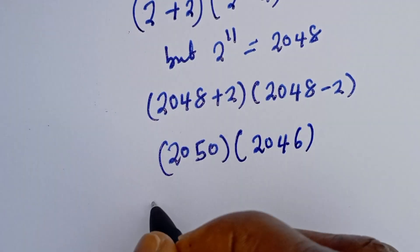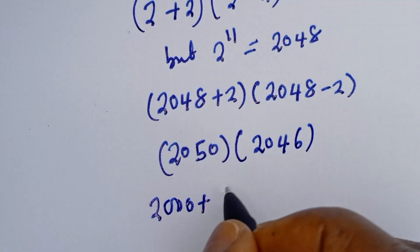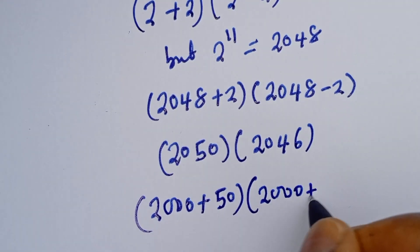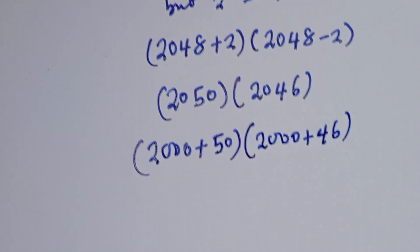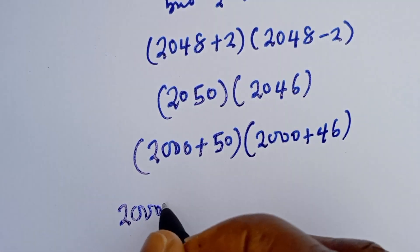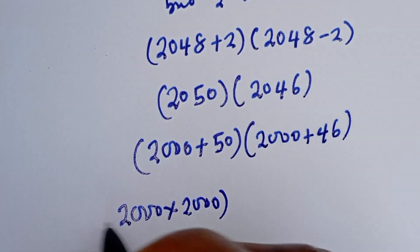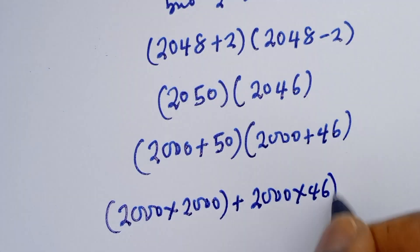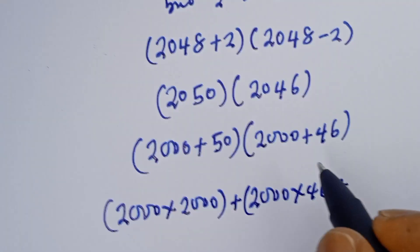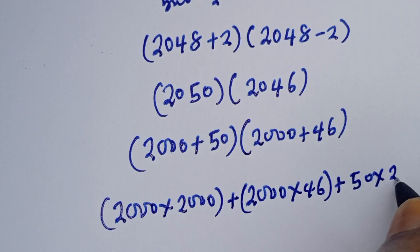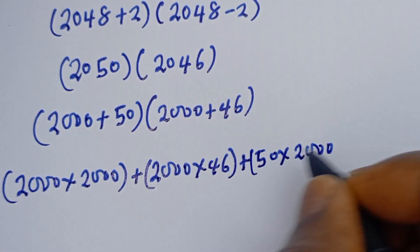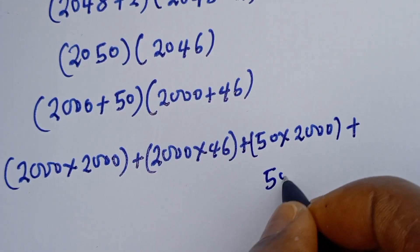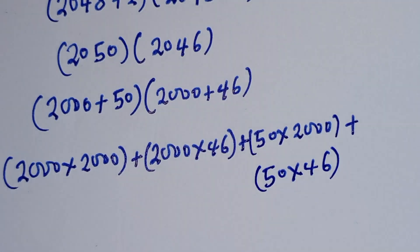Now, 2050 can be written as 2000 plus 50, and 2046 as 2000 plus 46. Let's multiply: 2000 times 2000, then plus 2000 multiplied by 46, plus 50 times 2000, then plus 50 times 46.